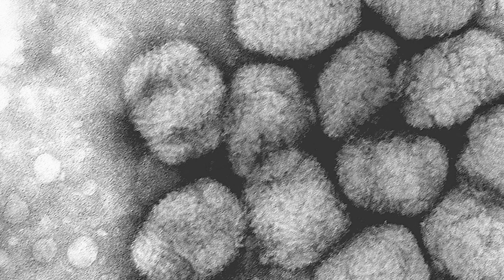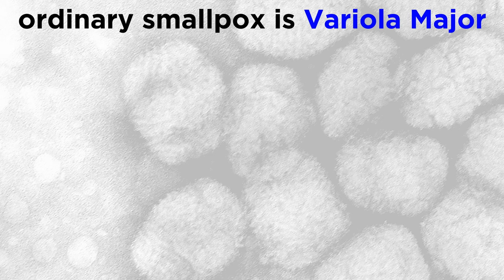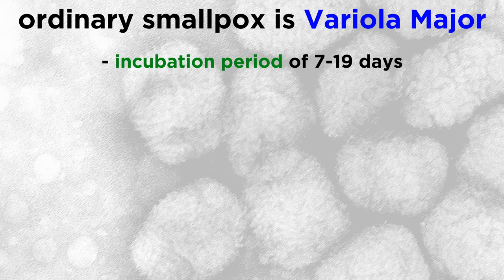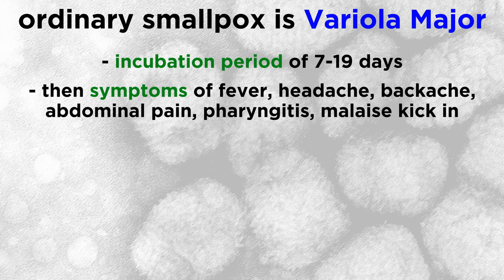There are several clinical forms of smallpox, each with different characteristics. Ordinary smallpox is also called variola major. The incubation period for the variola virus in ordinary smallpox is somewhere between 7 to 19 days before high fever, headache, backache, severe abdominal pain, pharyngitis, and/or malaise kicks in.